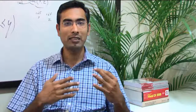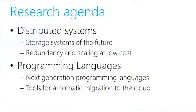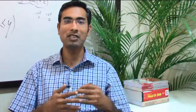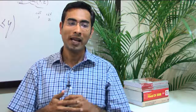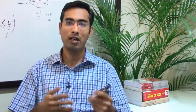Our research is essentially structured into two parts. Some of our work focuses on core distributed systems, where we are thinking about storage systems of the future and asking questions like how do you build redundancy and fault tolerance at really large scale. The second part of our research is focused on building the next generation of programming languages — specifically languages that support distributed systems from the ground up, unlike conventional languages which are designed for a single box and have no explicit support for distributed systems. We are also interested in tools that help you migrate your existing applications to the cloud.